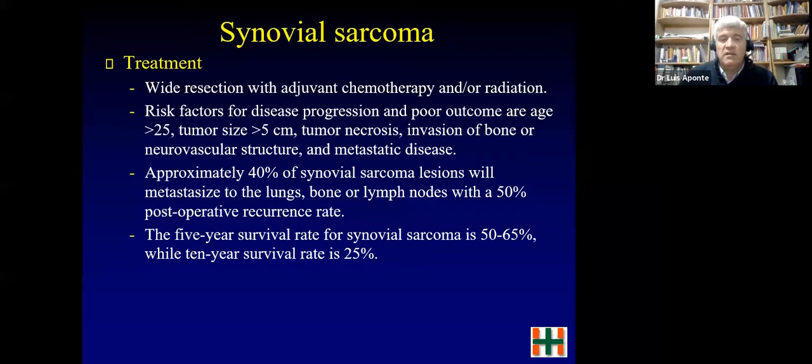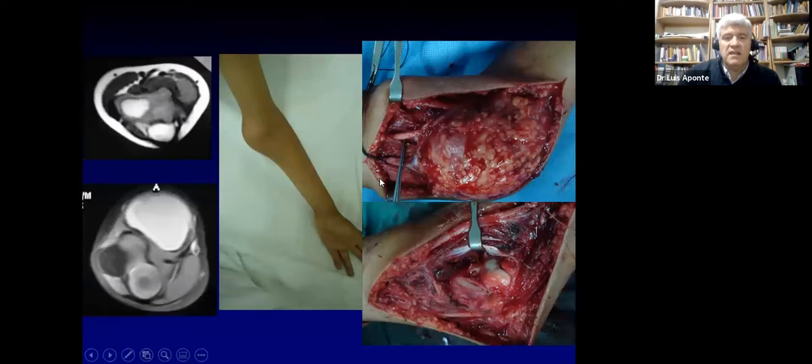You must be aware of a mass that grows slowly. This is the case shown before — small mass, then two years later a larger mass at the elbow, and here is the resection of the mass.